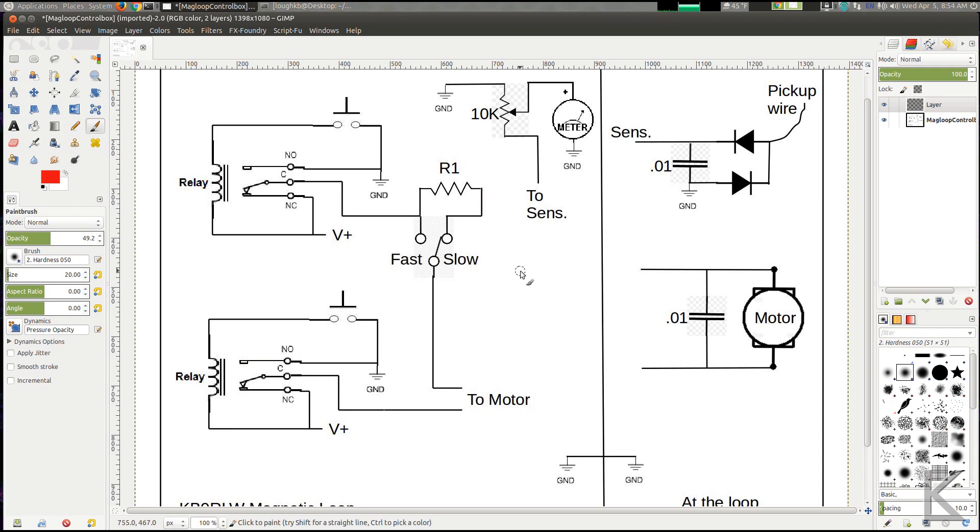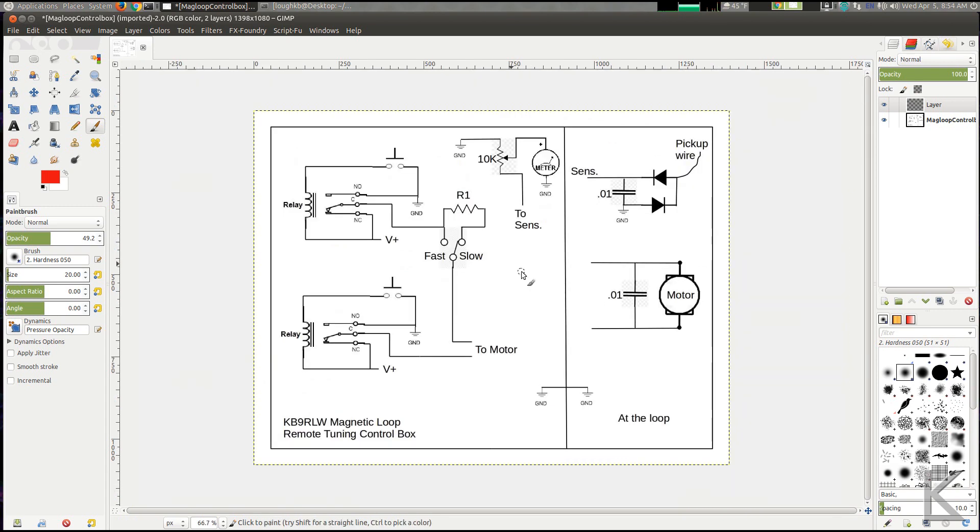So, pause the video here or take a screen capture. Shift Print Screen under Windows and under Linux will save you a picture of your video image. And you'll have the schematic, but like I say, it's very straightforward. So, that is how the control box is wired for my remote tuning.